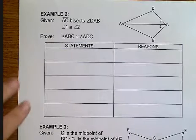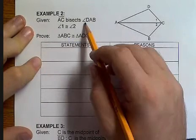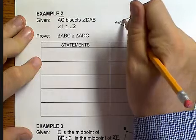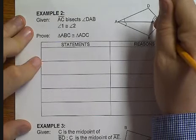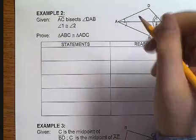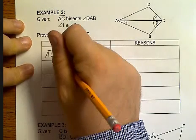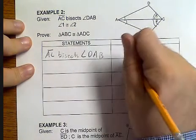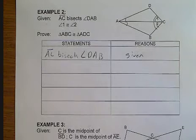Moving on to Example 2. We're told that AC bisects angle DAB, so it cuts DAB in half, meaning the two halves of the angle are congruent — angles 2 and 1 are congruent. I'll mark those with two arcs since that's the second angle congruency given. Our first statement is: AC bisects angle DAB, reason: 'given.' But that's not a congruency statement yet, so we need to add one.